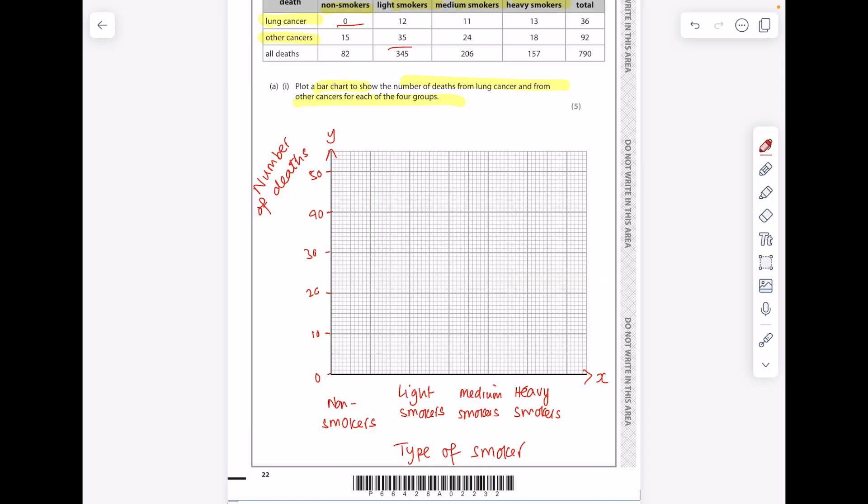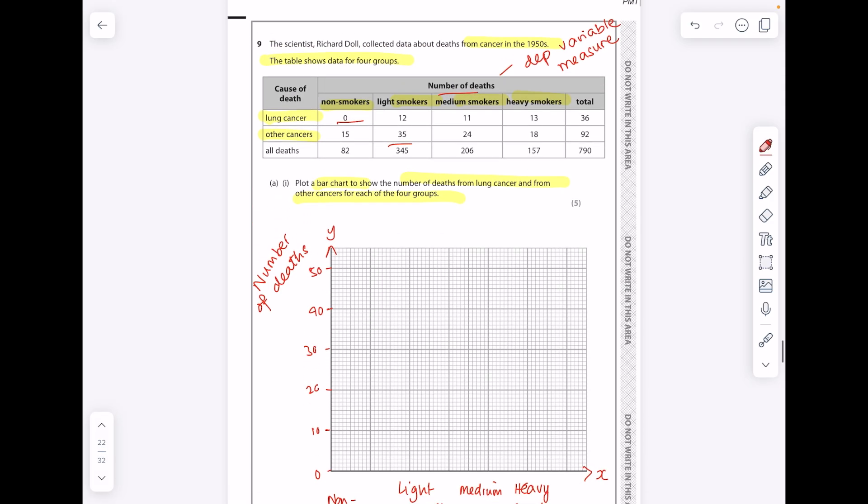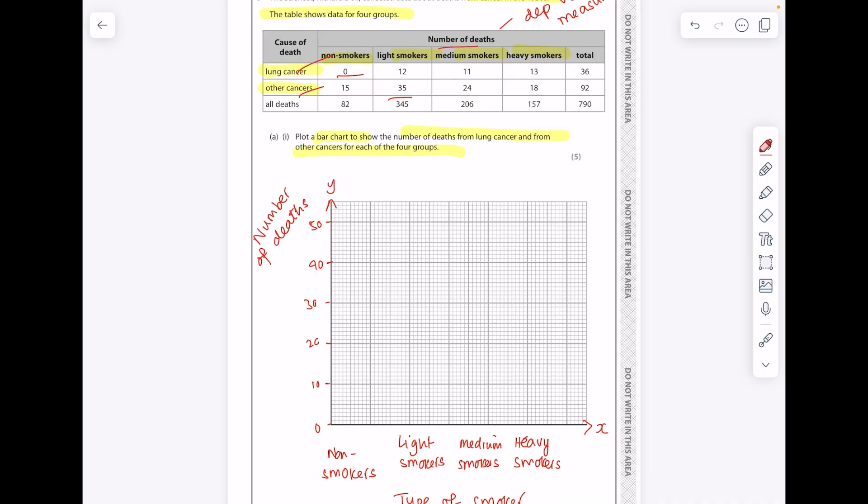And then for each category we're going to need two bars, one for lung cancer and one for other cancers. So non-smokers, lung cancer was zero, whereas other cancers was 15. And I'm going to use a key whereby my slashes represent other cancers and my blank represents lung cancer.